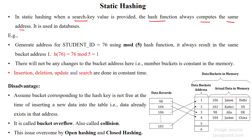This kind of static hashing is used in database accessing. For example, the student table has student records — 4 records are given here for the students.